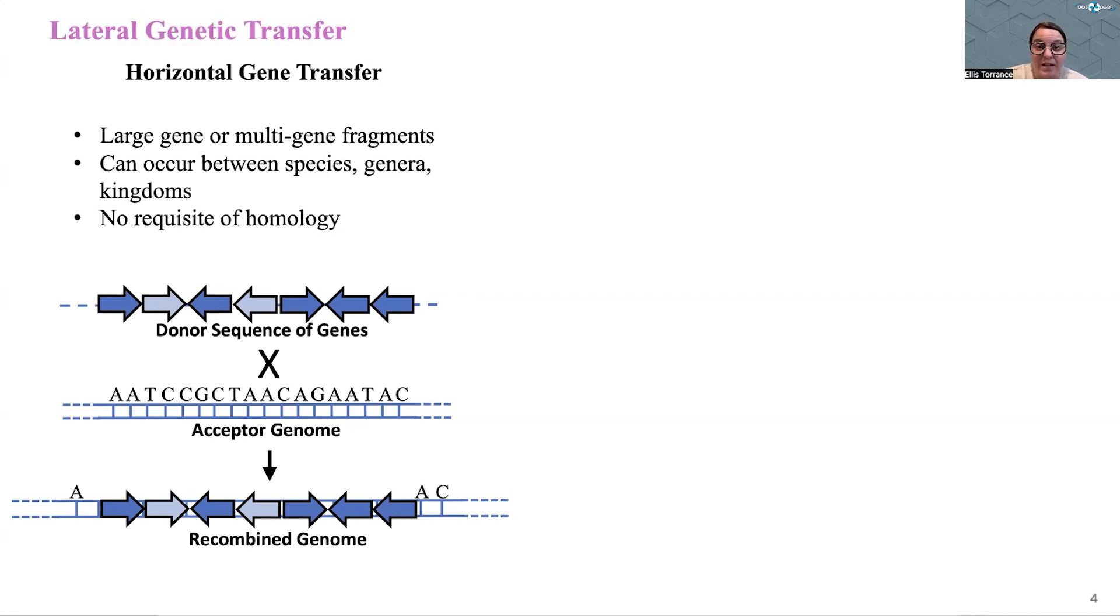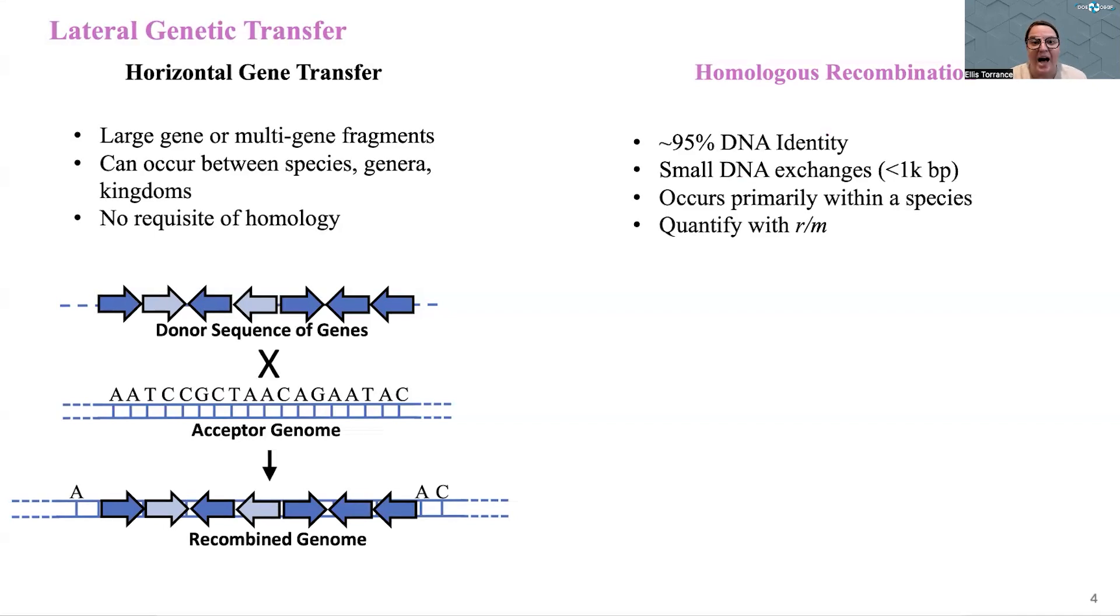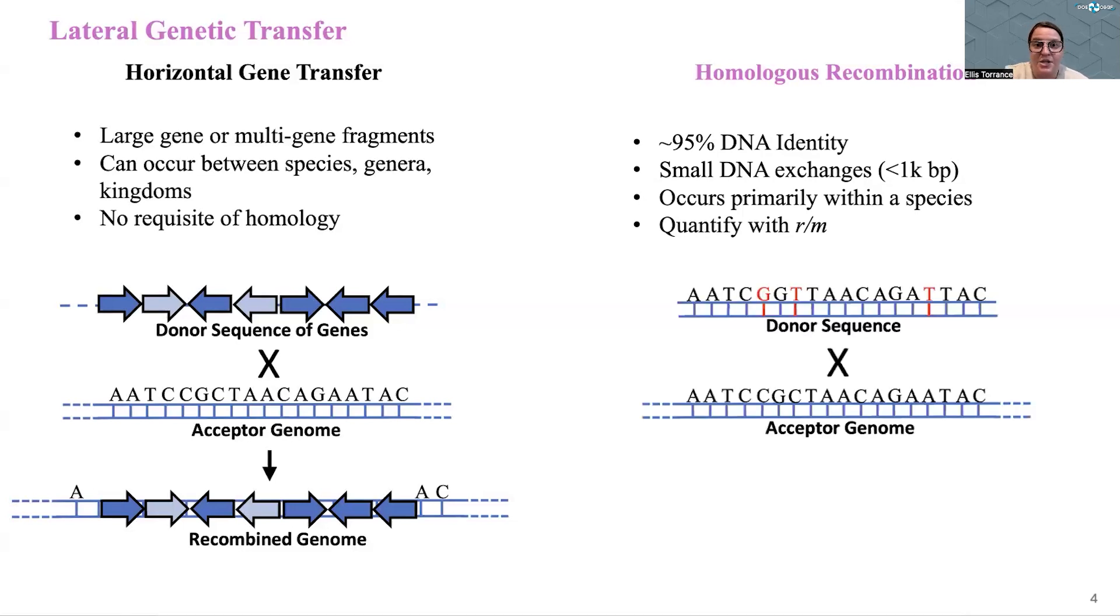Homologous recombination, on the other hand, is trickier to identify. Here we've got a really high level of DNA identity between strands being exchanged, 95% similarity between those individual nucleotide sites. These are really small exchanges, and because we've got this requisite of homology, this type of exchange is occurring primarily within the same species. What we generally do is quantify this exchange via r over m, or recombination rate, which is a measurement of the number of changes imparted by recombination versus mutation to a DNA sequence.